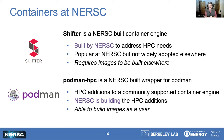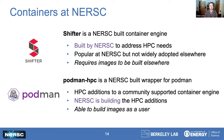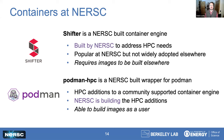We have two different container engines here at NERSC: Shifter and Podman HPC. Shifter has been around for a while — NERSC built it about eight or nine years ago to address the HPC needs we were seeing at the time. It's incredibly popular here at NERSC with many users using it successfully, but it really didn't become widely adopted elsewhere. Additionally, you have to build the images someplace else — it's fairly easy to do, but it's an additional step that requires you to be off of Perlmutter.